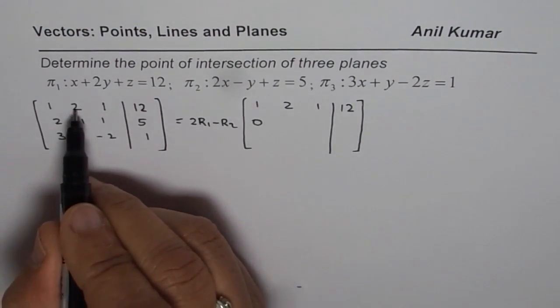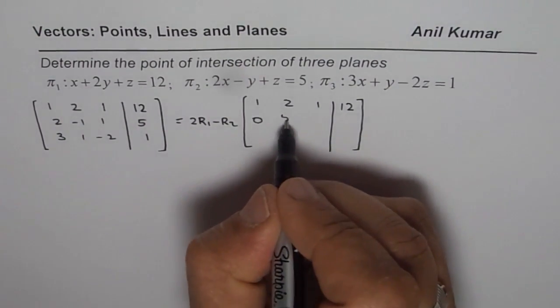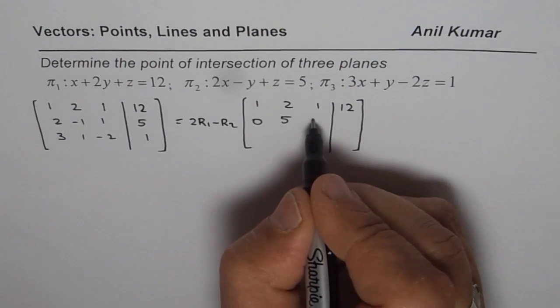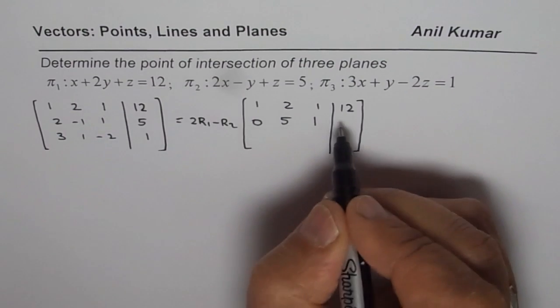This is what we want. 2 times 2 is 4, 4 minus -1 will give us 5. 2 times 1 is 2, 2 - 1 is 1. 2 times 12 is 24, 24 - 5 is 19.